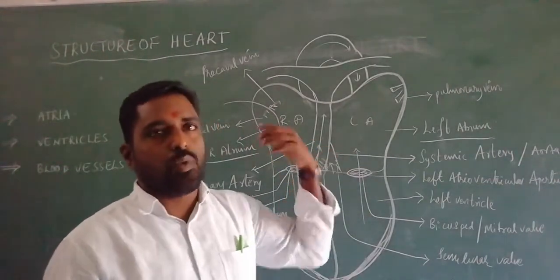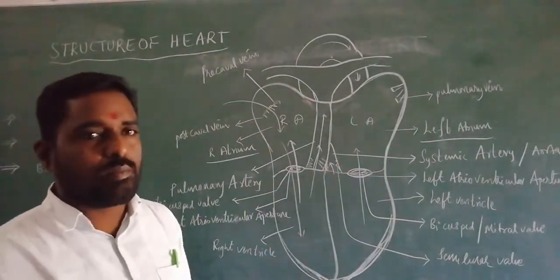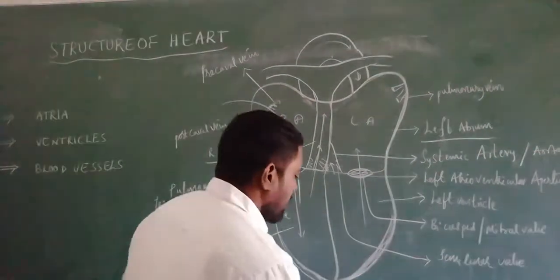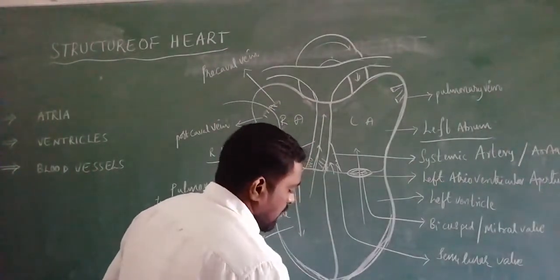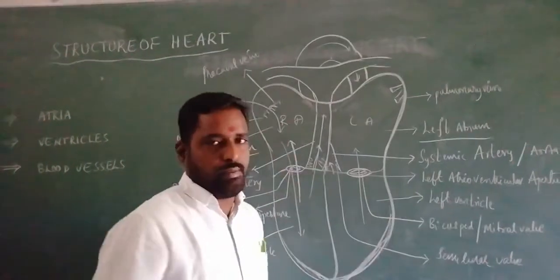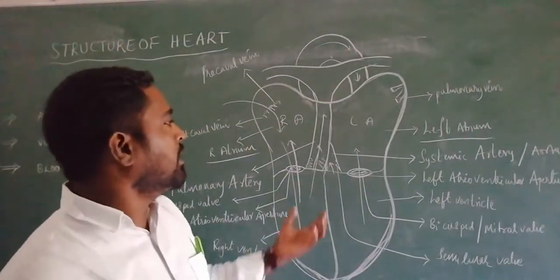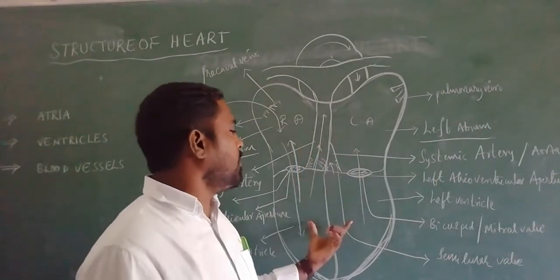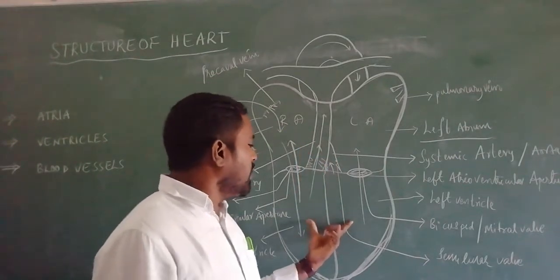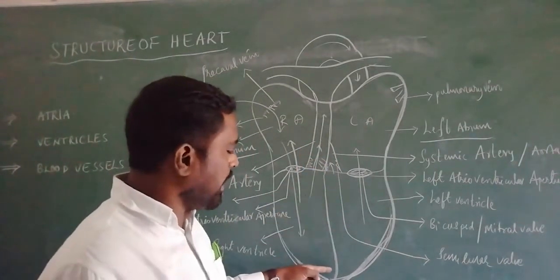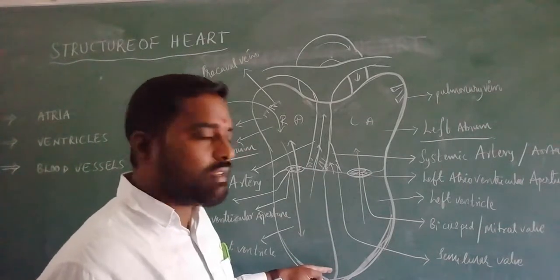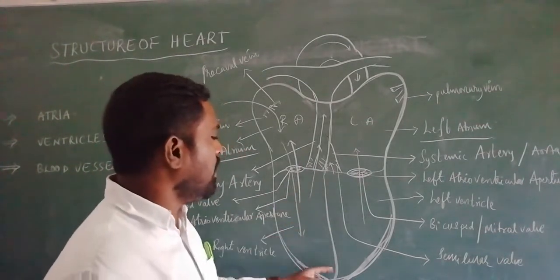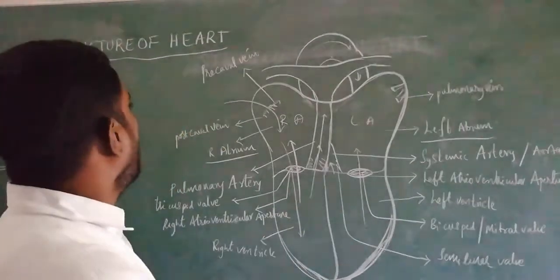The systemic aorta gives many branches that supply blood to both the anterior and posterior parts of the body, supplying all the body parts. The two ventricles are separated from each other by the interventricular septum.